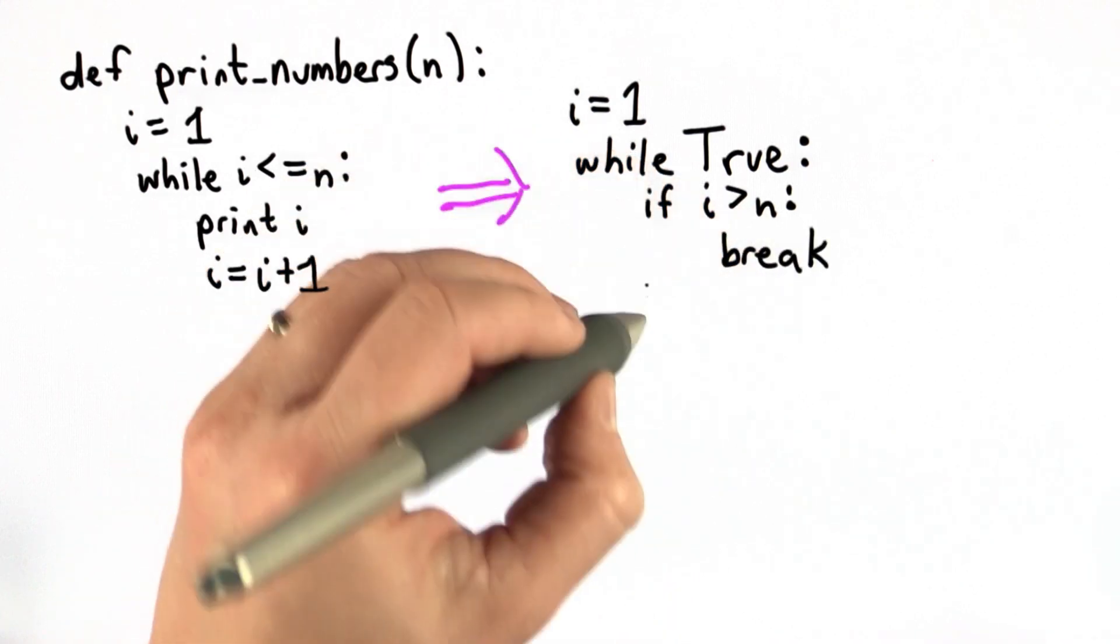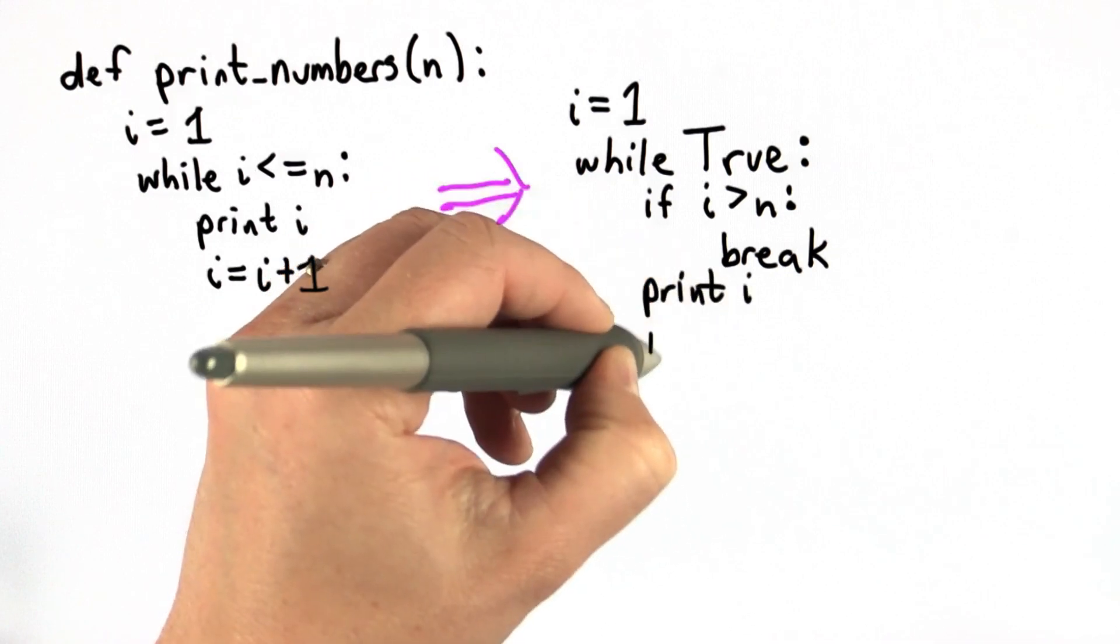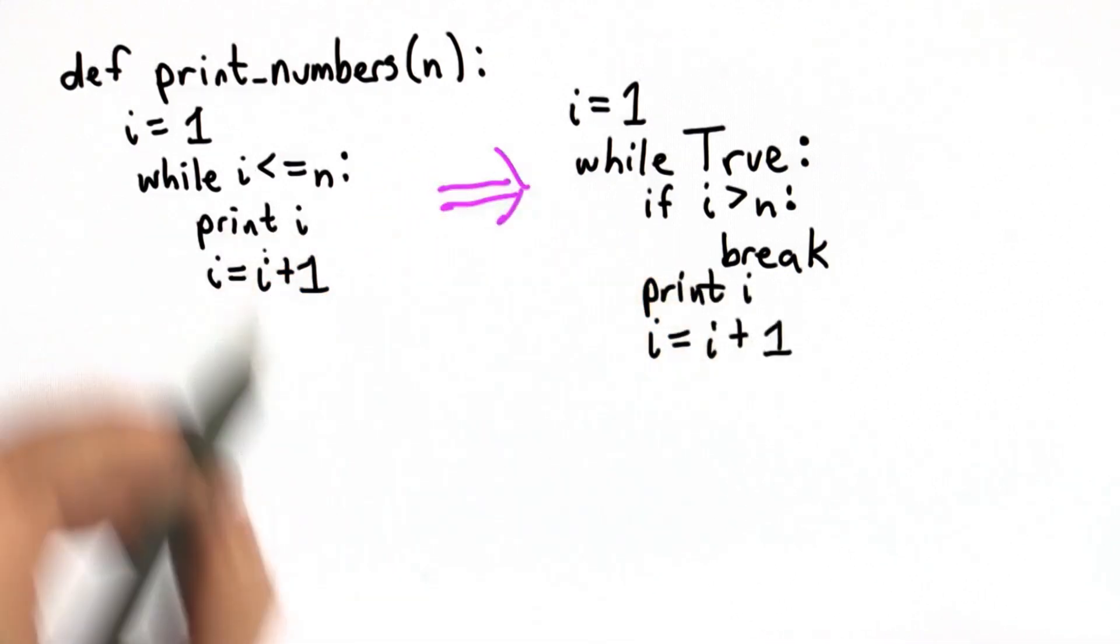If i is not greater than n, then we're going to keep going. We'll do the same thing we did before. We'll print i, and we'll add one to i. So this loop has exactly the same meaning as the one we had before.